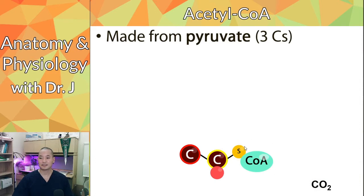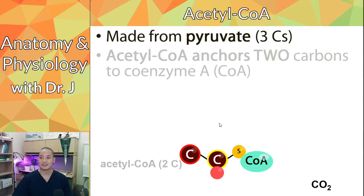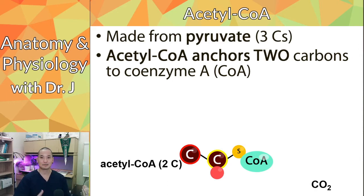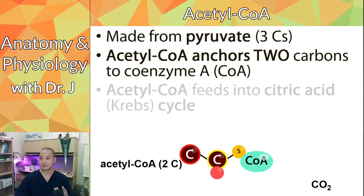Acetyl-CoA is basically linking a special molecule called CoA — coenzyme A. So acetyl-CoA is anchoring two carbons to coenzyme A. The acetyl group plus coenzyme A is acetyl-CoA.